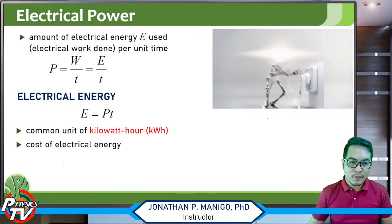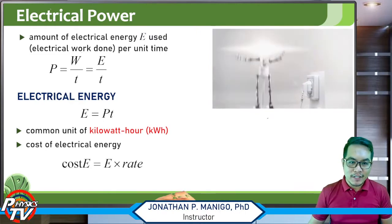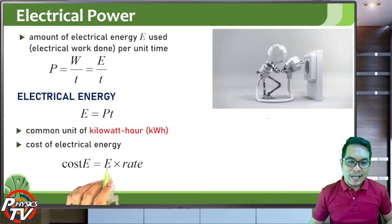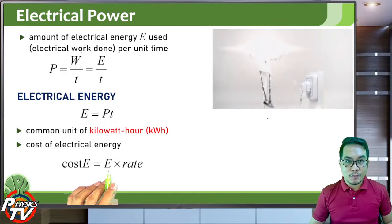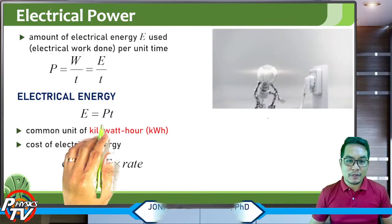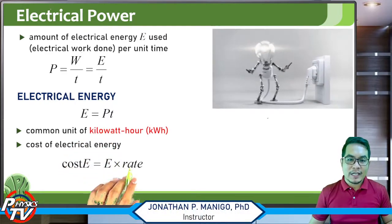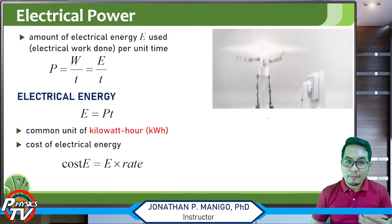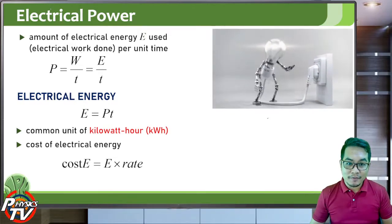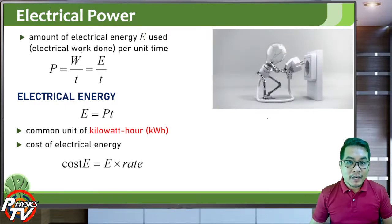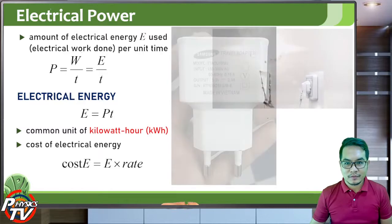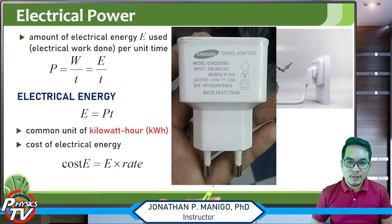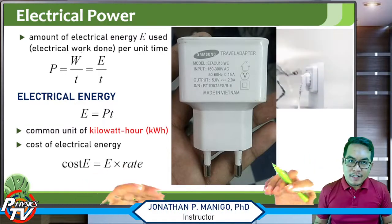Knowing the unit for electrical energy, the cost of electrical energy is simply the electrical energy consumed — which is power times time — multiplied by the rate, that is, the price per kilowatt-hour.